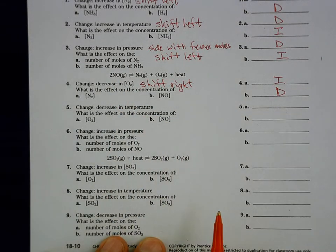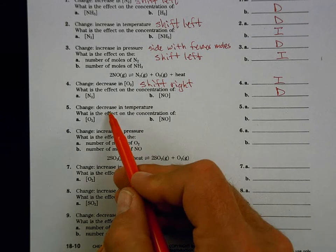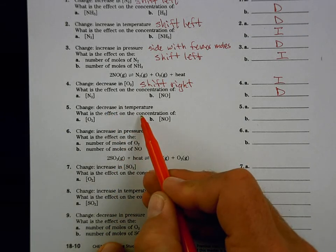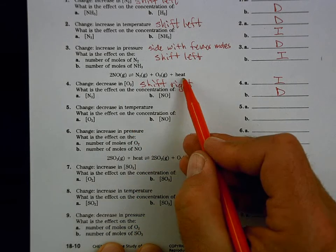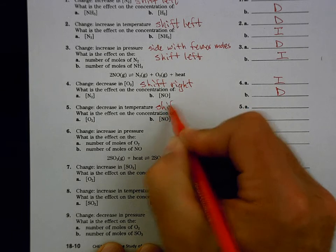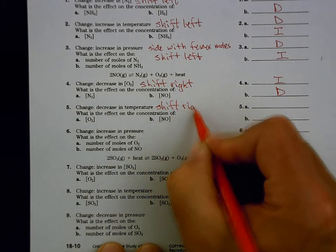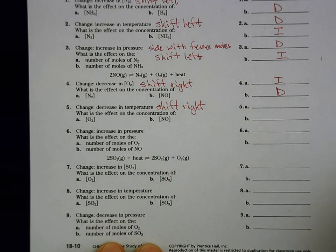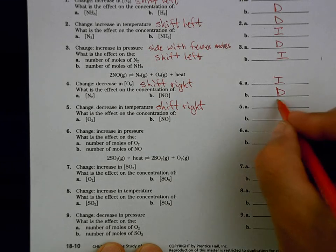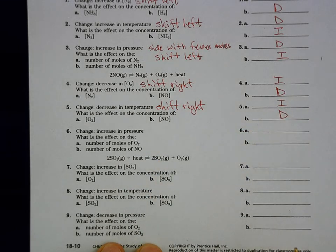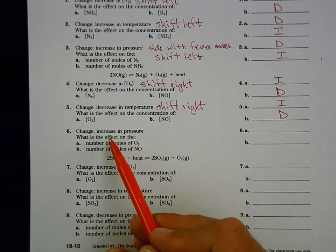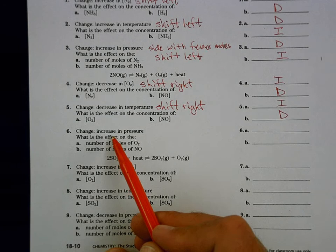A decrease in temperature: if we have a decrease in temperature, we want to shift to the side that has the temperature part. The heat is on the right, so this is also a shift right. O₂ would increase and NO would decrease.